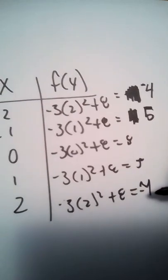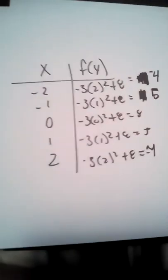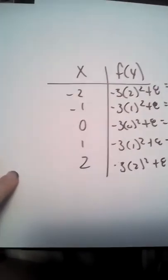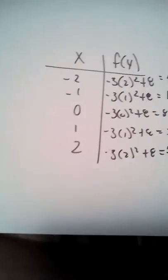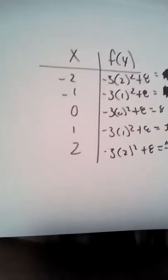8, 5, and negative 4 again. Once we have made our table, we can graph, remembering that our parabola is going to be going downward.